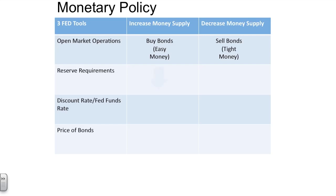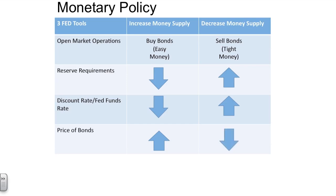In terms of the reserve requirement, if the Fed wanted to increase the money supply, they would reduce the reserve requirement, making it easier for banks to loan more excess reserves. If they wanted to make it more difficult to lend money, they would increase the reserve requirements. Ultimately, if the Fed wants money to flow in the banking system, they would lower the discount rate or the federal funds rate, making it easier for banks to access liquid assets; if they wanted to make it more difficult, they would raise those rates. The price of bonds works inversely with interest rates — if interest rates are falling, the price of existing bonds is rising; conversely, if interest rates are increasing, the price of bonds is falling. That's a quick summary of the money market model and some of the tools of the Federal Reserve's monetary policy.